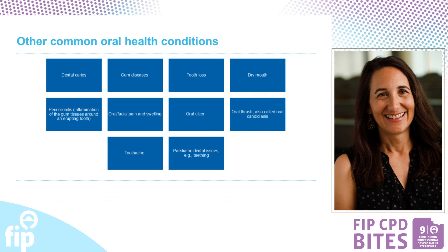Other oral conditions are listed here, and I will quickly review some of those. Starting with dental caries: the earliest visual sign of dental caries is a demineralization of the outer layer of the tooth, which is the enamel. This may appear as a white spot lesion on the enamel. If the demineralization continues, the surface of the enamel will break down and begin to cavitate, which is why we refer to it as a cavity. As dental caries progress, it can be very painful and may cause an infection of the tooth, leading to what we call an abscess.